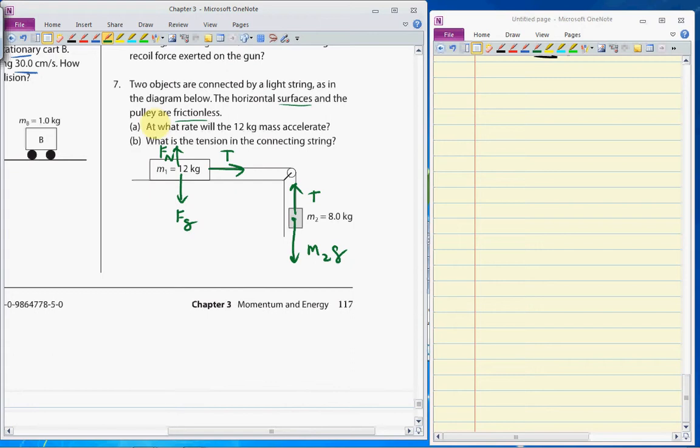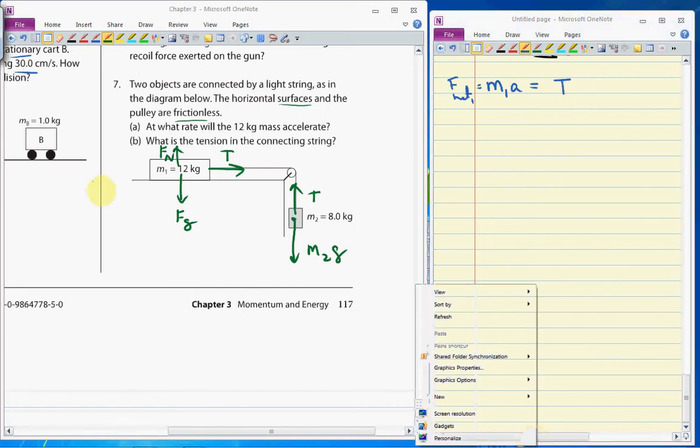What is the rate then of the mass? Think of each one separately. What is going to cause the first mass, M1, to accelerate? That's the net force. Fnet on mass 1 is M1 times A. What causes it to speed up? Tension. What causes it to slow down? Nothing, because there's no force of friction.